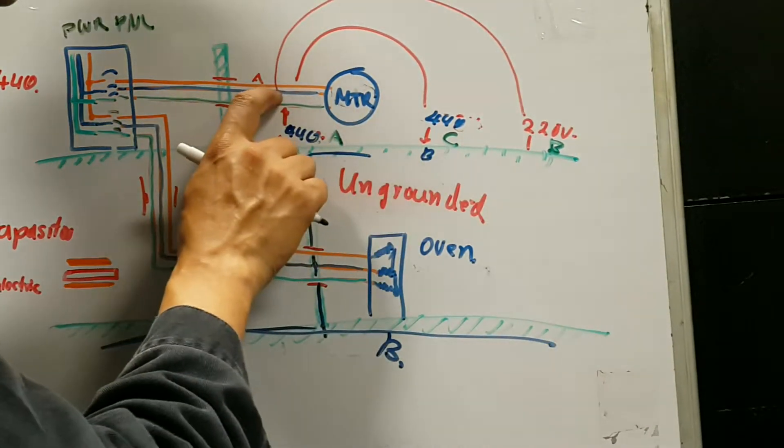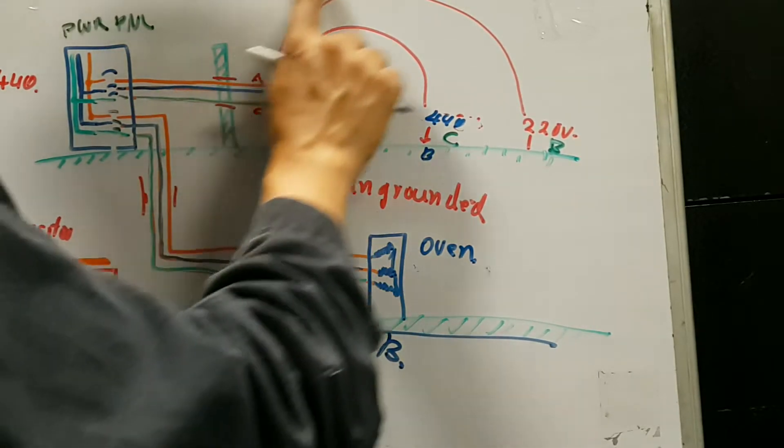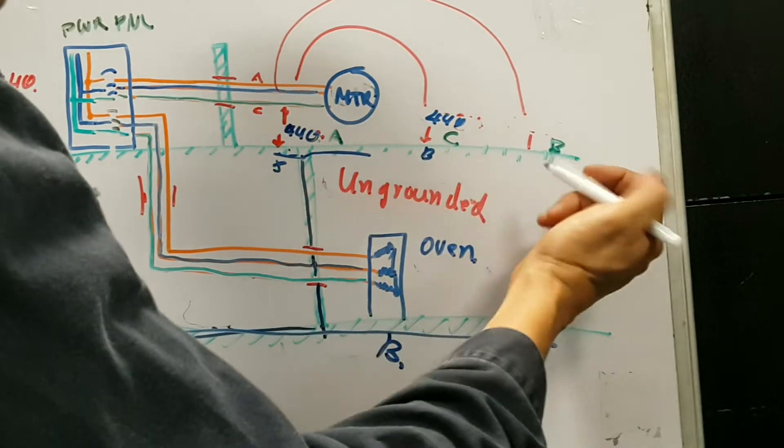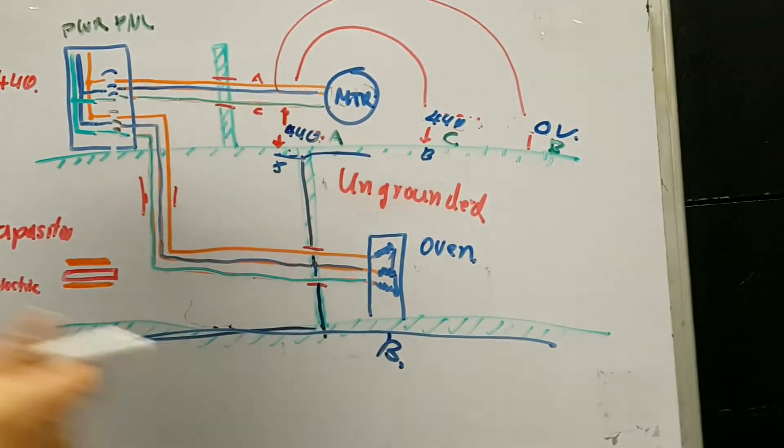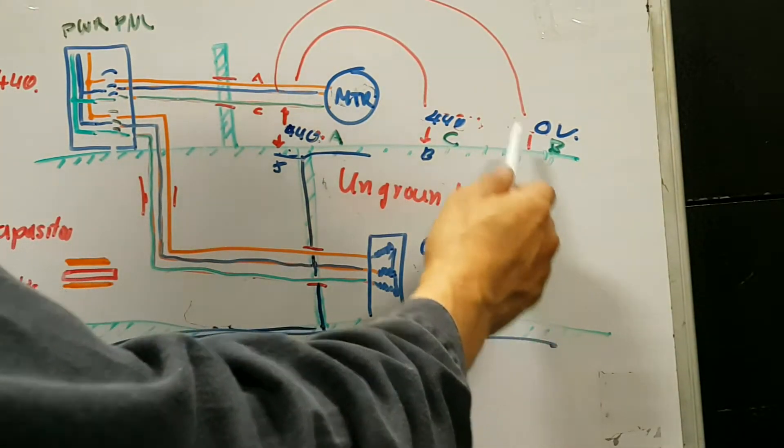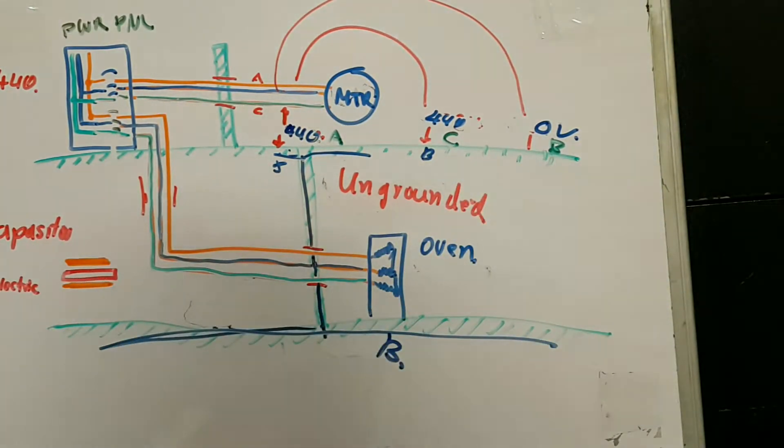But now let's look at this one. This phase is B potential, and the ship is B potential. So the difference of potential will be 0 volts. If you ever see one phase to ground 0 volts, that means it's grounded.